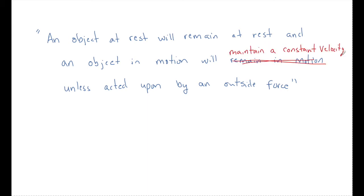So the first thing that I would fix is when I read this, I'd say an object at rest will remain at rest, and an object in motion will maintain a constant velocity unless acted upon by an outside net force. This gives a much clearer picture of Newton's first law.